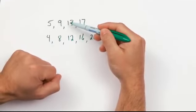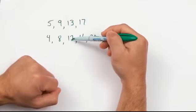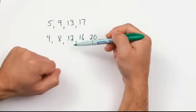13 is the 3rd term, and 13 is 1 more than 12, which is the 3rd multiple of 4.